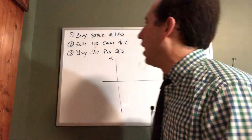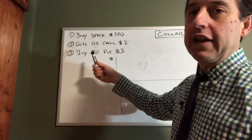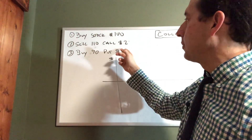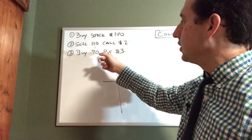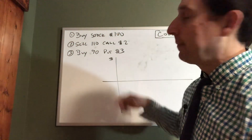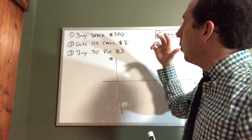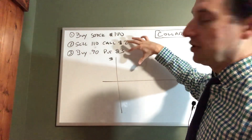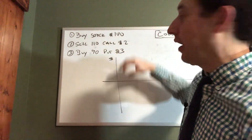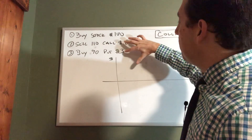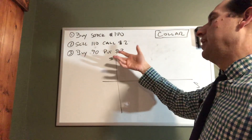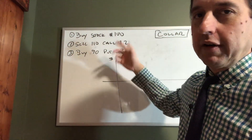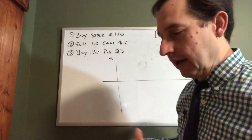Here we'll look at the case where we bought a stock for $100, sold a 110 strike price call option for $2, and bought a 90 strike price put option for $3. Our net cash flow from the options is negative $1, so right off the bat I know my break-even is going to be 101.